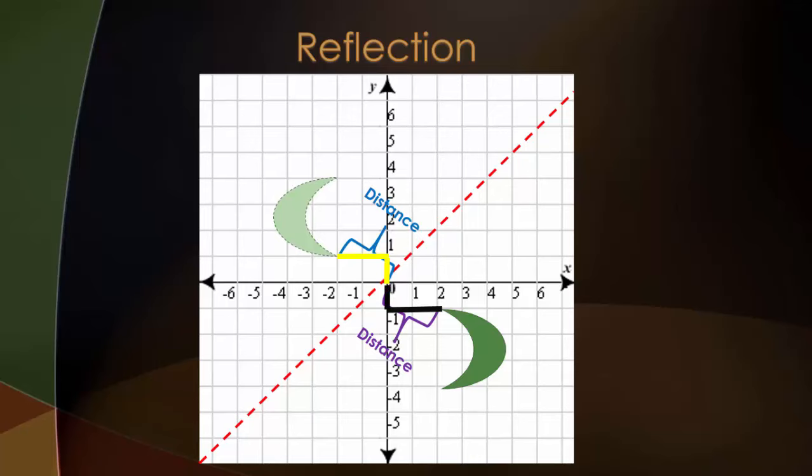Now again, if we do this for every single point of our pre-image, we will then get our image. But most of the time you just have to do it for the vertex and you'll be able to connect the dots.